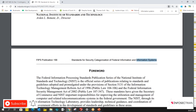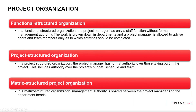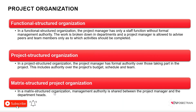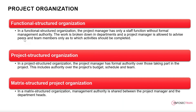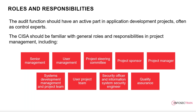There are multiple types of project organizations. In a functional structured organization, the project management function has only a staff function. In a project structured organization, the project manager is more involved in the project and its design. Then there is a matrix structured project organization, which is a mix of both the functional and project structured organizations.